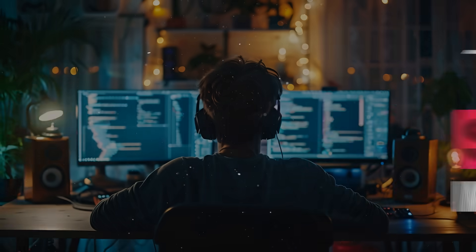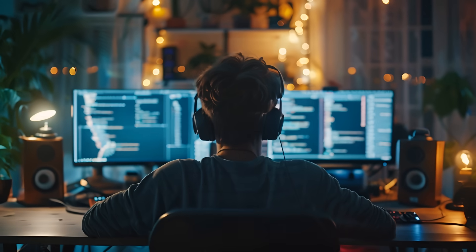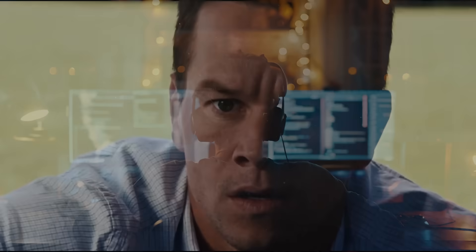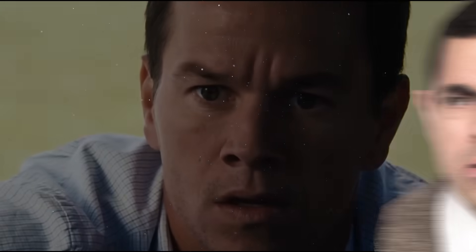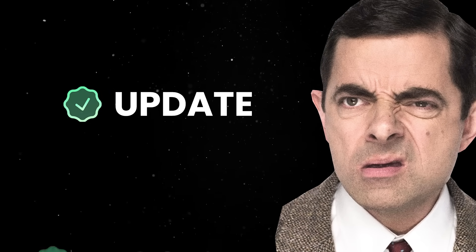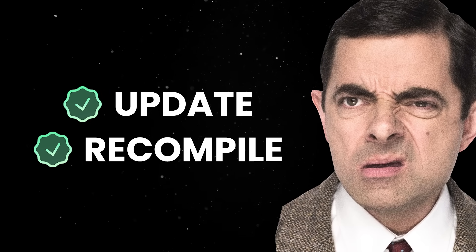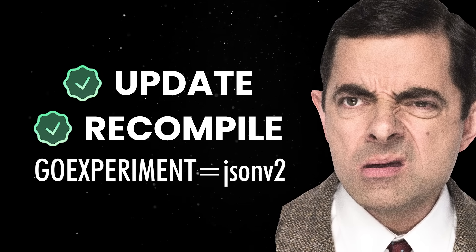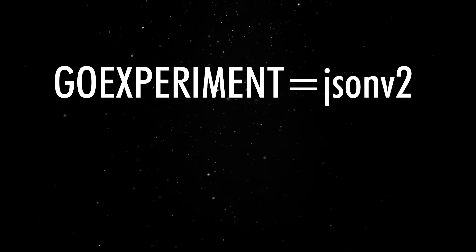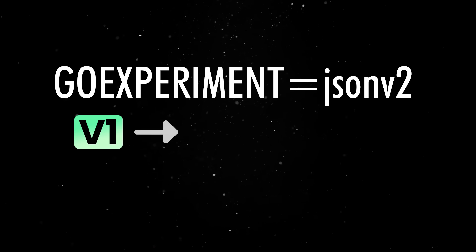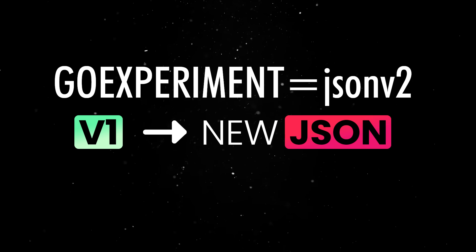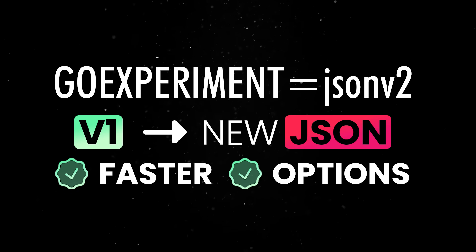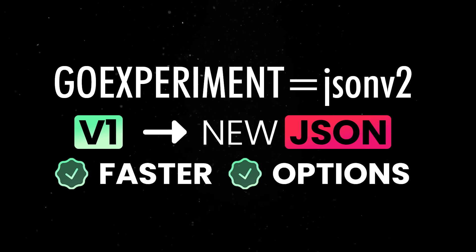But there is also a catch. None of this is stable yet, and the implementation might break some stuff — this is something Go devs are not really used to. Normally, you can update your Go version, recompile, and move on with your life. This time around, you'll have to opt-in using the experiment flag. Turning the flag on makes the v1 package use the new JSON implementation, which is faster and supports some options for better compatibility with the old marshalling and unmarshalling behavior.